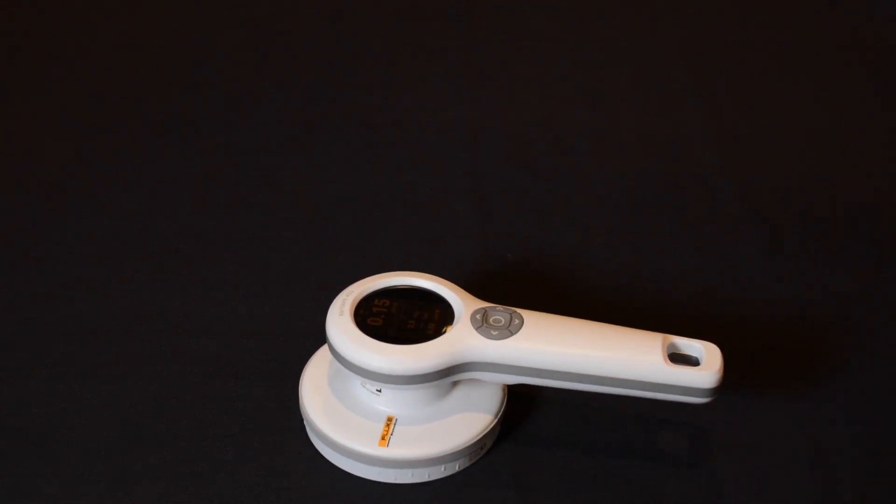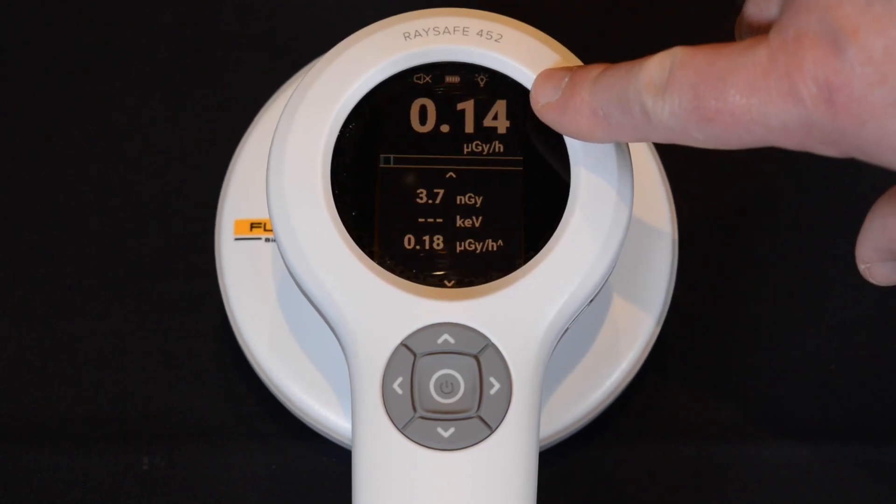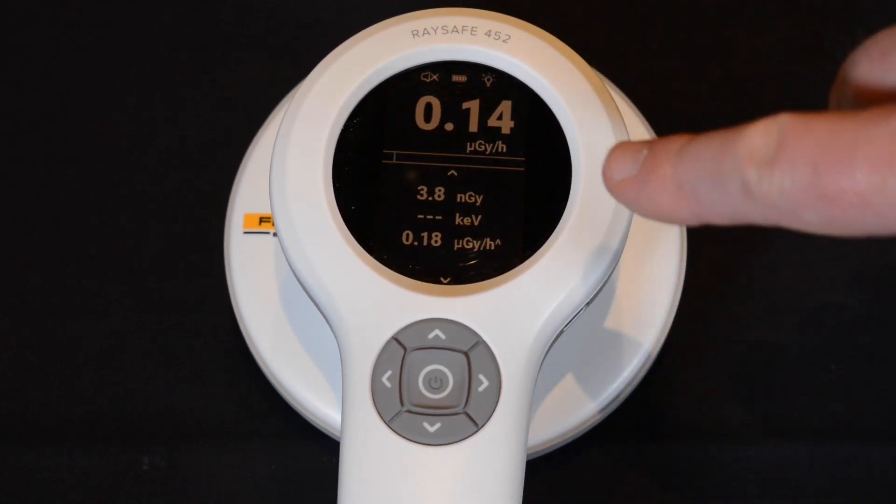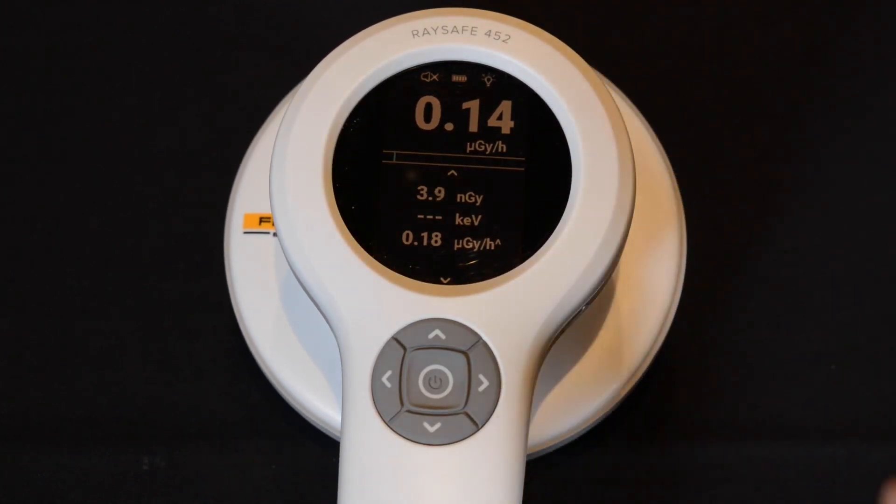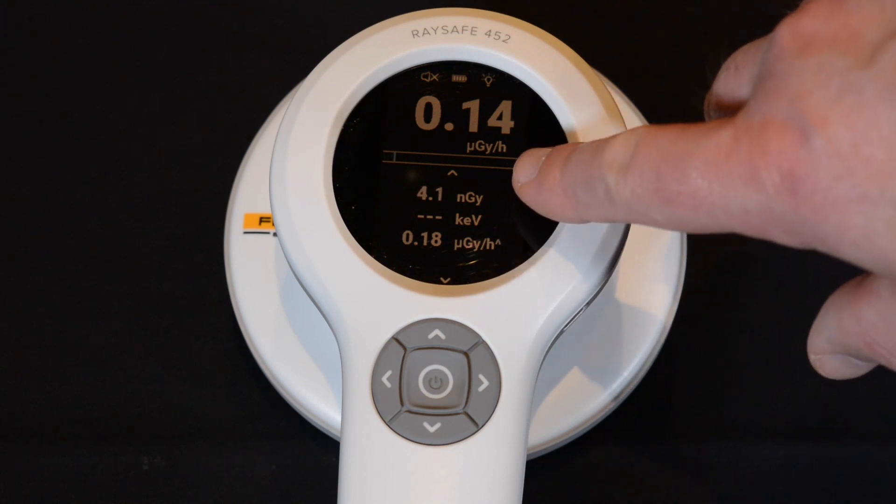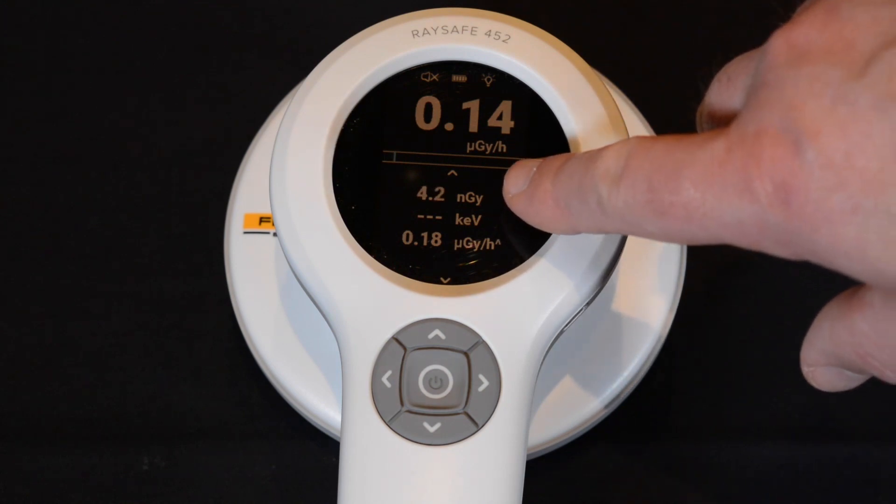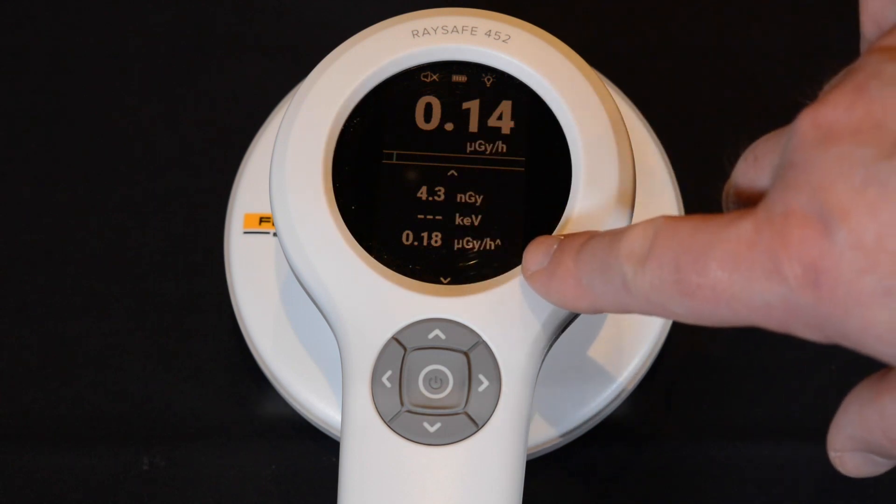The first row always shows the live intensity. Next is the integrated dose for the measurement. If intensity is high enough, you also get the live mean energy. At the bottom, you have the highest intensity recorded.